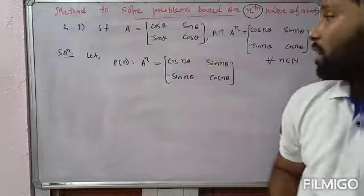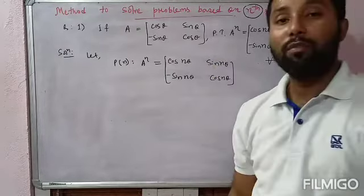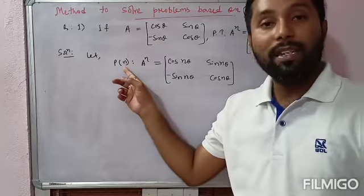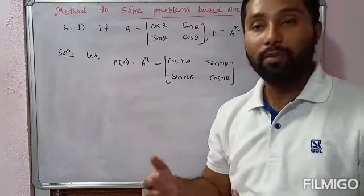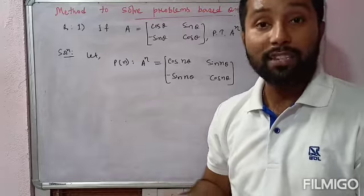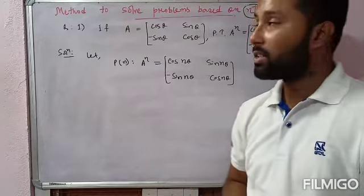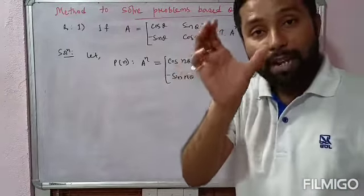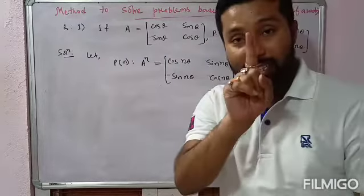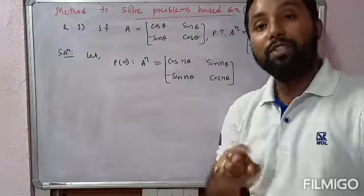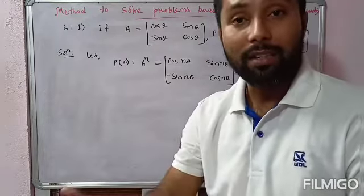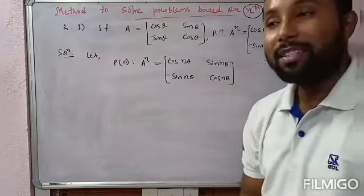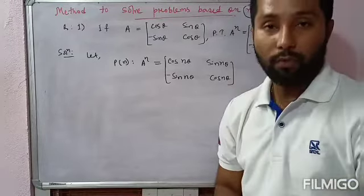We consider the matrix containing n as P(n), not the matrix without n. The matrix which contains n — that is the nth power matrix — only that matrix is to be considered as P(n). This is the first step. These four steps will be followed only.